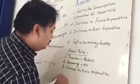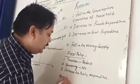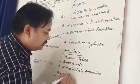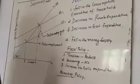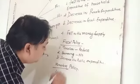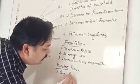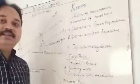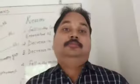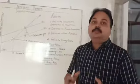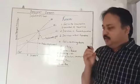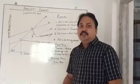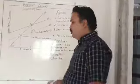Now, what is the monetary policy? Monetary policy is related with the CRR and bank rate. Regarding bank rate — this time, the bank is going to give a loan to the customer at a very low rate of interest, by which consumption is going to increase in the economy. So, bank rate is going to be reduced.